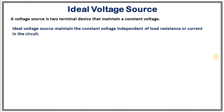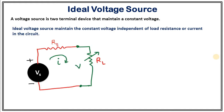An ideal voltage source maintains constant voltage independent of load resistance or the current in the circuit. Here we have a simple circuit with a supply voltage Vs which has a certain internal resistance Rs — every instrument can have its own internal resistance. This voltage source is connected to some load RL, and the voltage across RL is V. As per the definition of ideal source, V should be constant and ideally it should equal Vs, and it should not change with RL.